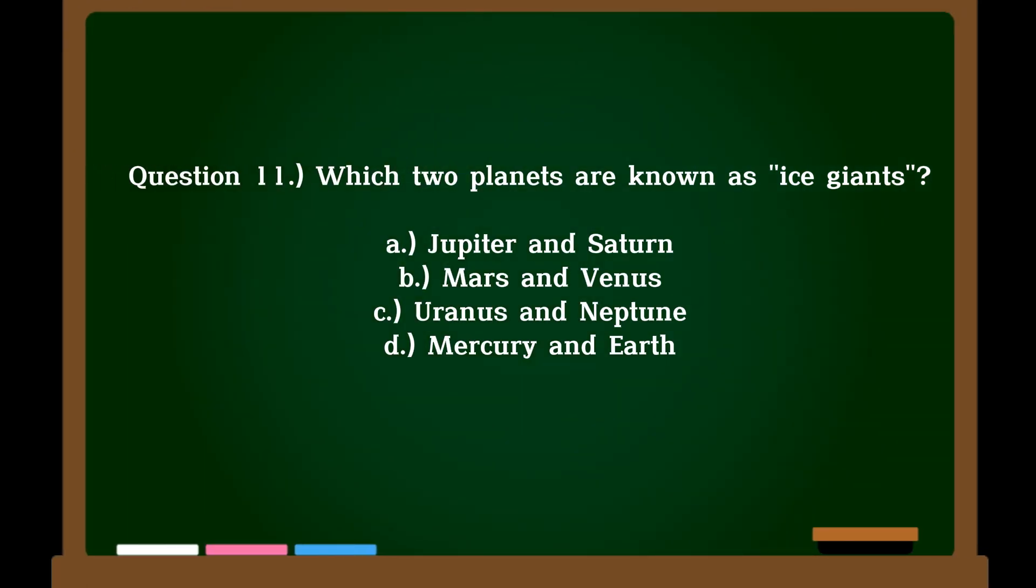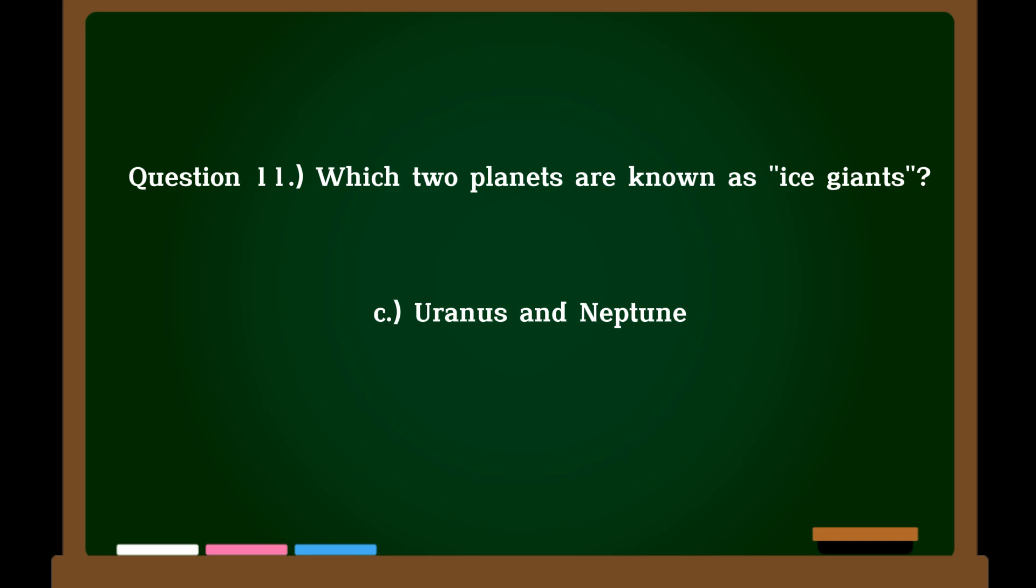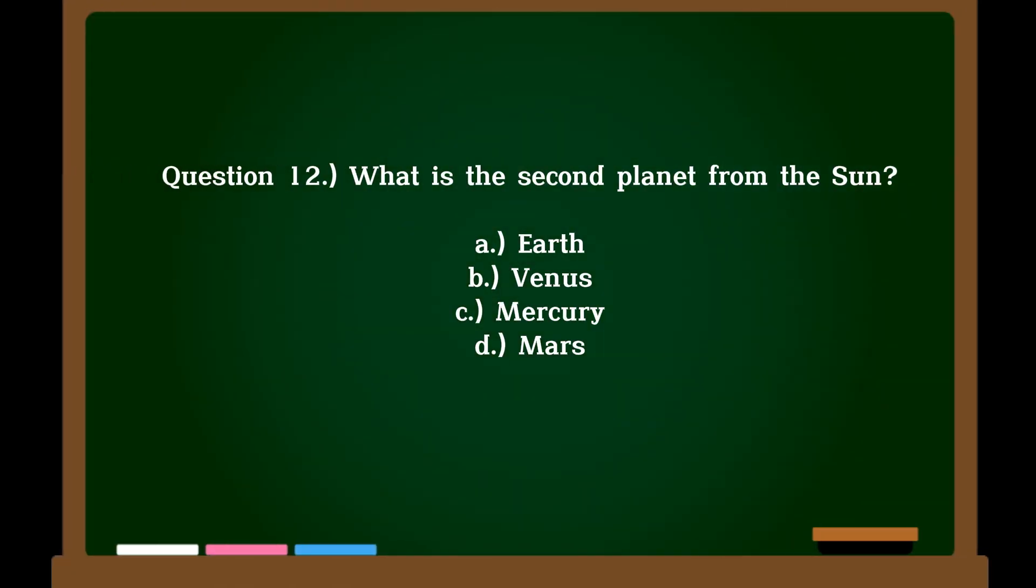Question 11. Which two planets are known as ice giants? A. Jupiter and Saturn, B. Mars and Venus, C. Uranus and Neptune, D. Mercury and Earth. Correct answer: C. Uranus and Neptune.